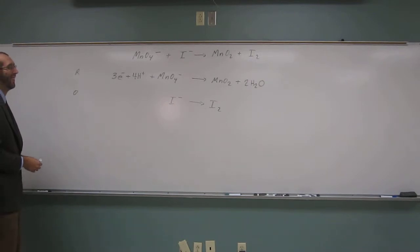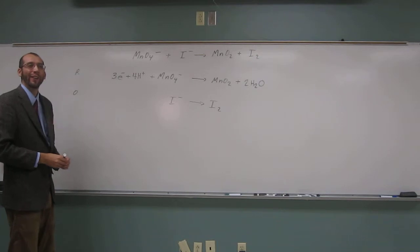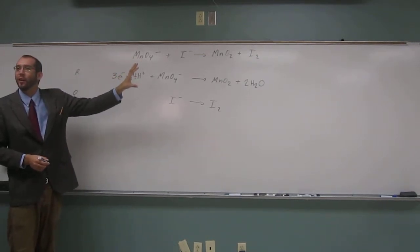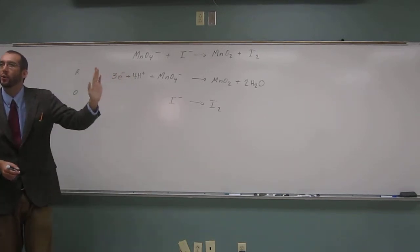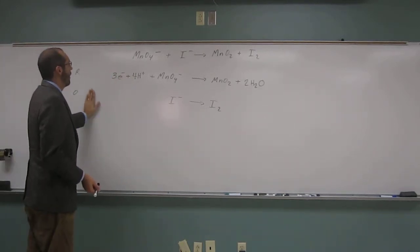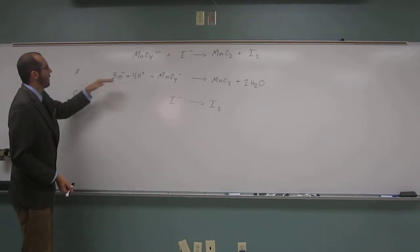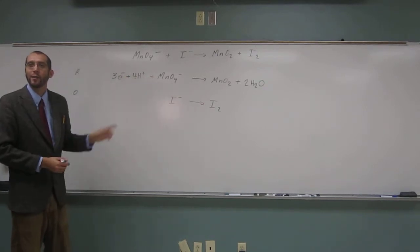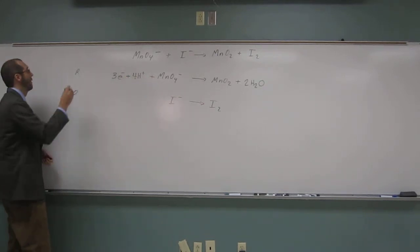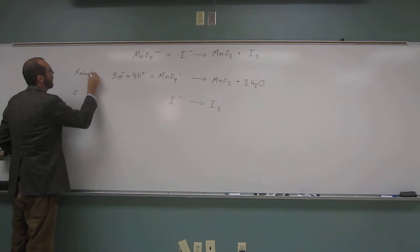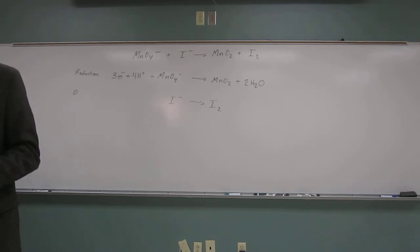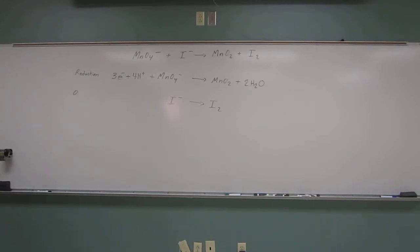So now charges are balanced, atoms are balanced, everything's cool. So what do we see? Electrons are being added to this side. So what does that mean? Gaining electrons, so it's the reduction, right? It's the reduction half-reaction. Notice our initial assessment was correct just by looking at the amount of oxygens. So that's another way to look at those reductions.